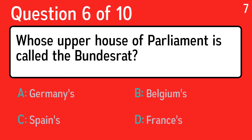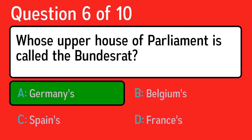Question 6. Whose upper house of parliament is called the Bundesrat? The correct answer is A, Germany's.